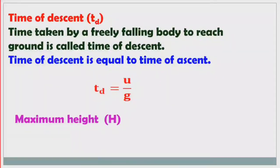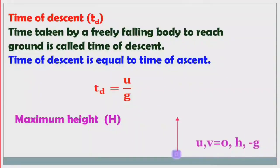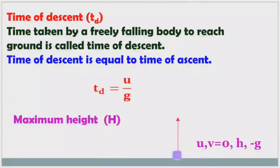Maximum height. When we throw an object with certain velocity, it will reach a certain height. Its velocity slowly decreases, and at a certain height its velocity becomes zero. That height where velocity becomes zero is called maximum height. Maximum height is the height at which the velocity of the vertically thrown object becomes zero. At maximum height, the final velocity becomes zero.